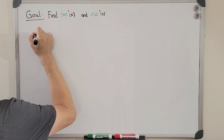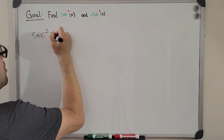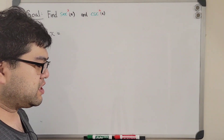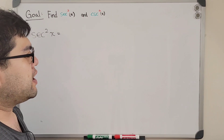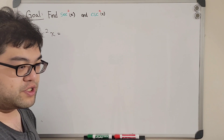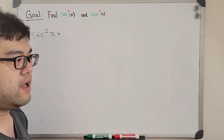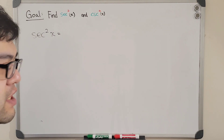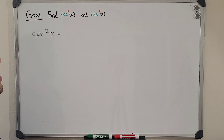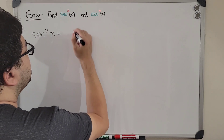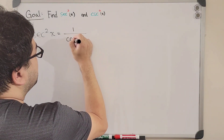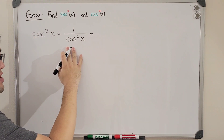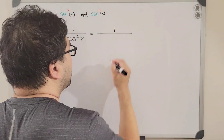First: secant squared of x. By definition, secant is the same as 1 over cosine, because secant is the reciprocal of cosine — you can think of it as a definition or prove it from a triangle. Using that, secant squared of x becomes 1 over cosine squared of x. Since we already know what cosine squared of x is, we'll substitute it.